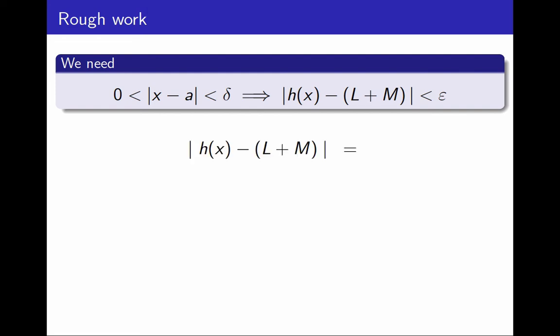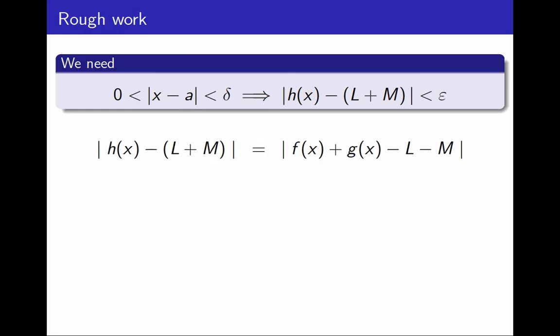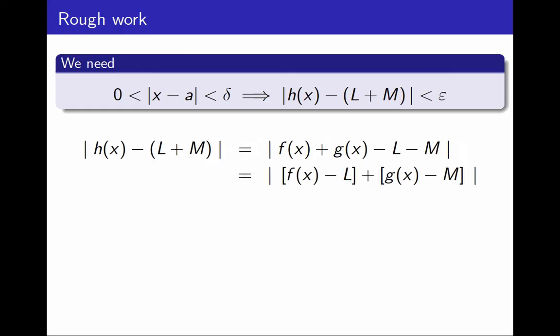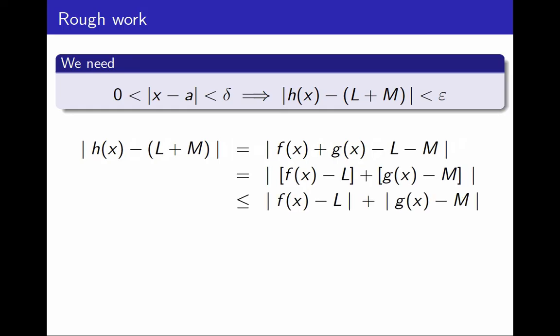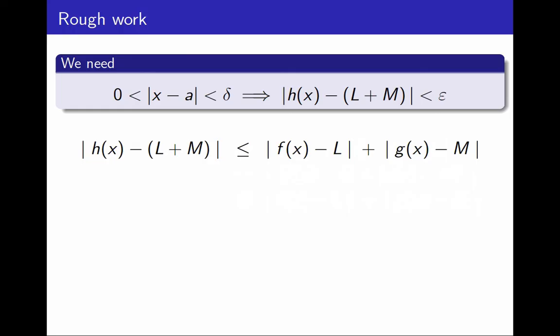I want to end up concluding that the distance between h and l plus m is less than epsilon. First, a little bit of algebra: I can write h in terms of f and g, and I can group the terms on the right. Then I use the fact that the absolute value of a sum is less than or equal to the sum of the absolute values — this is just the triangle inequality. I will keep this inequality because I'm going to need it.